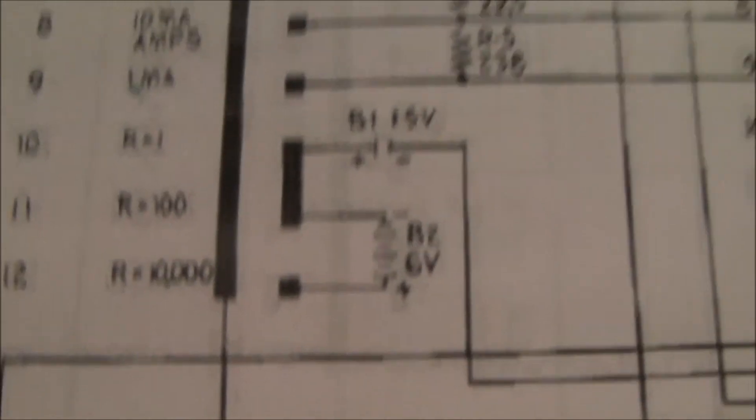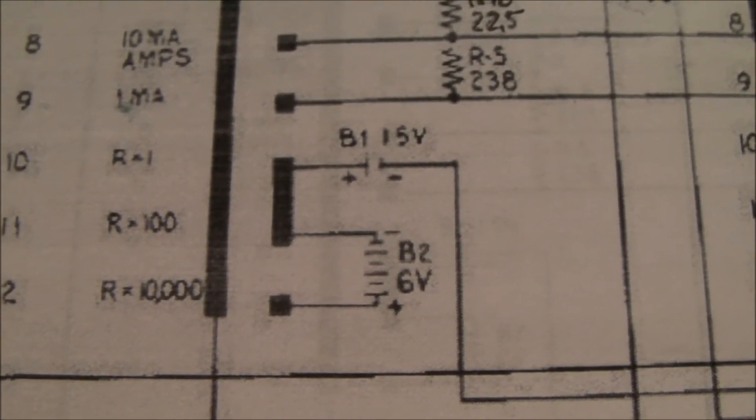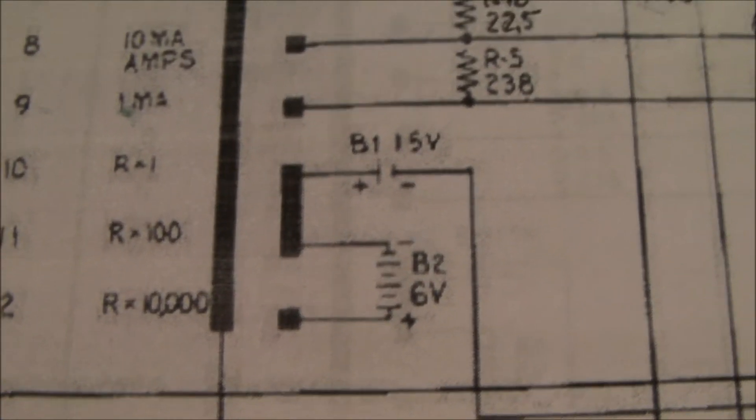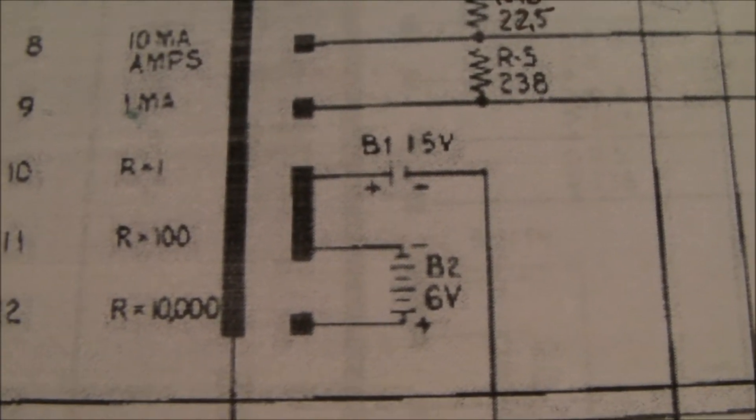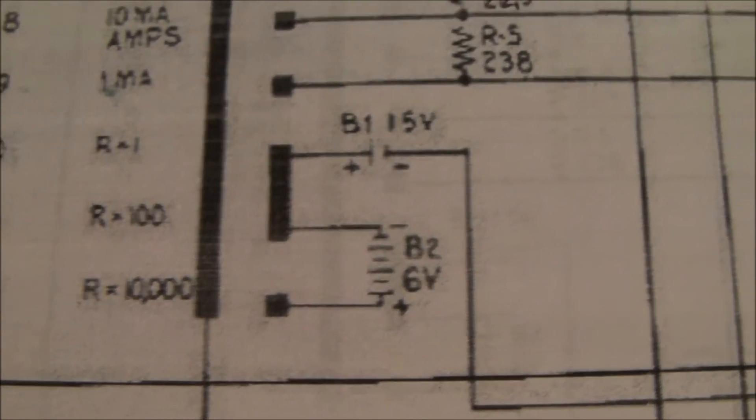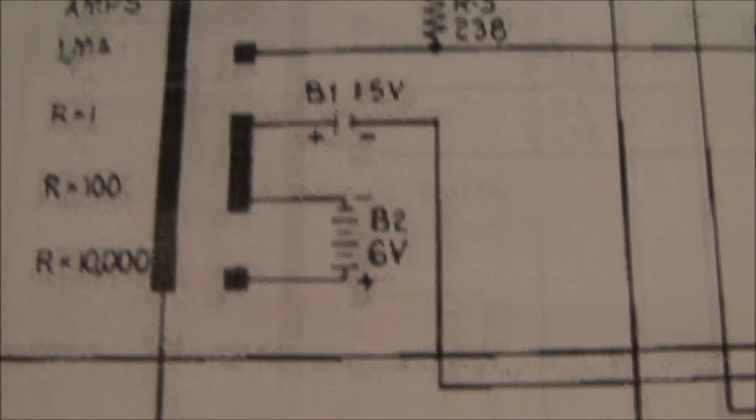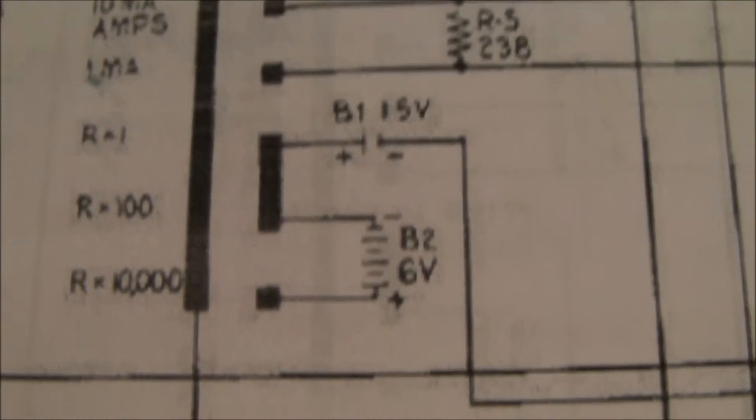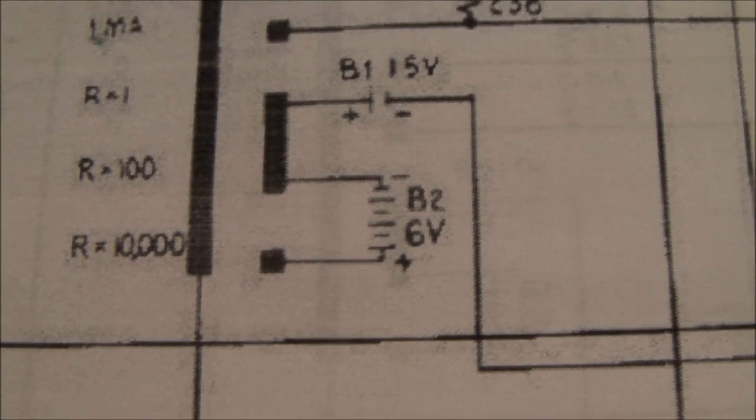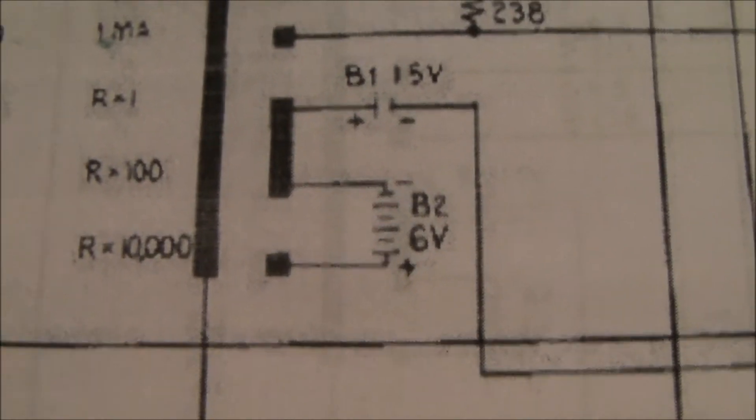After studying the schematic a little further, you can see right here that when the selector switch is in R times 1 or R times 100, the six volt battery circuit is not in the circuit. So the six volt battery, four penlight batteries in this case, four double A's, are not in the circuit and are not used until you go to R times 10,000.